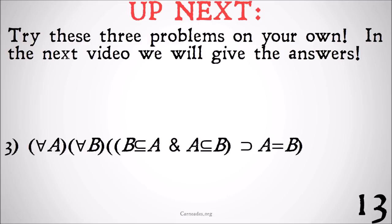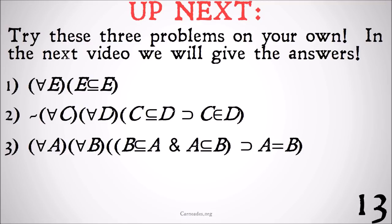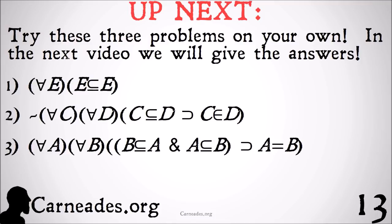Up next, I want you to try three problems on your own; in the next video we'll give the answers. First: for all e, e is a subclass of itself — we said we'd prove this but only had a statement of it earlier. Second: it's not the case that for all c and all d, c is a subclass of d implies c is a member of d — just because something is a subclass of something doesn't mean it's a member of it. Third: for all a and all b, if b is a subclass of a and a is a subclass of b, then a equals b. Try all three on your own. Watch this and more at carneadies.org — stay skeptical, everybody.